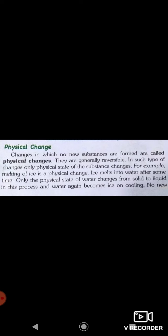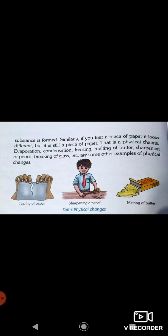Physical changes mean that the physical state of the substance changes — solid or liquid — but if we reverse the conditions, it will reach its first position. For example, melting of ice: water is in a liquid physical state, but if we return it to the freezer, it will again convert into ice. Only the physical state of water changes, and no new substance is formed.